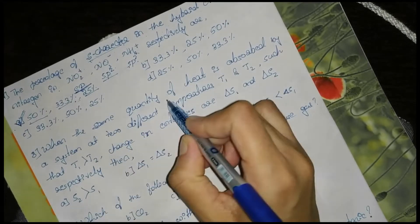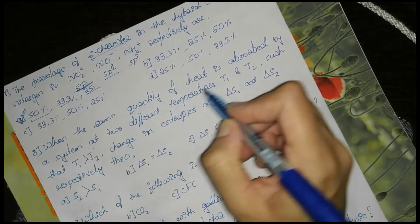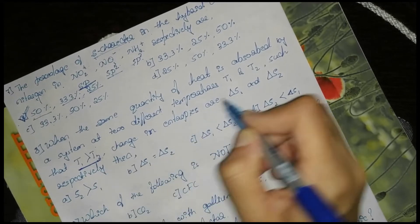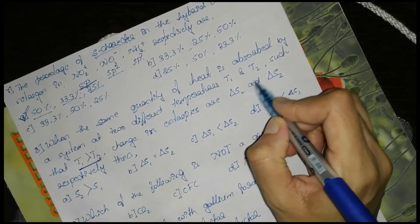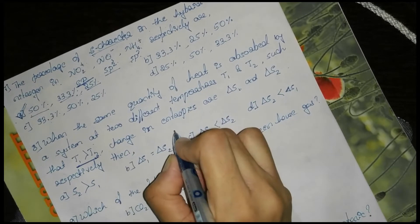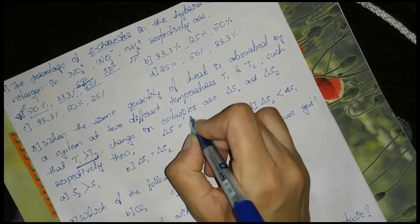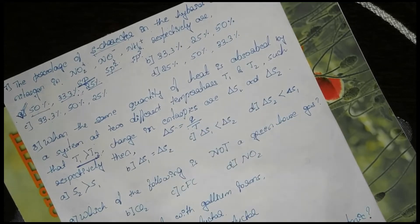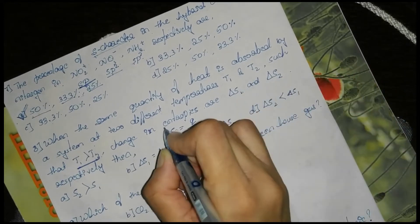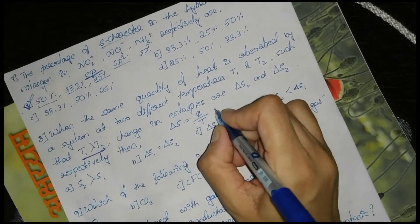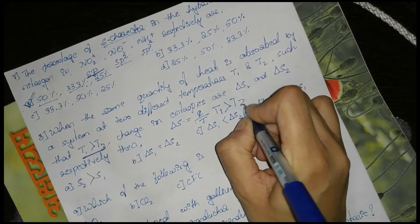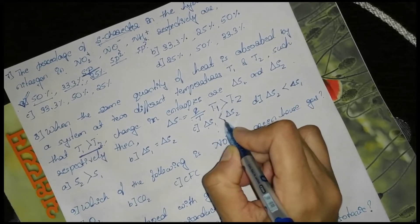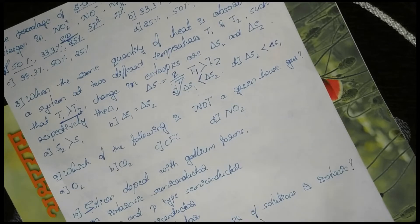Next: when the same quantity of heat is absorbed by a system at two different temperatures T1 and T2 such that T1 > T2, using the equation ΔS = Q/T, since ΔS is inversely proportional to T, if T1 > T2 then ΔS1 < ΔS2. Option C is the correct answer.